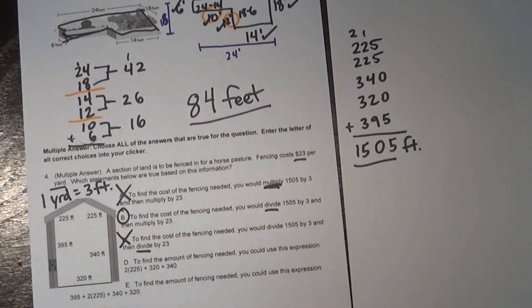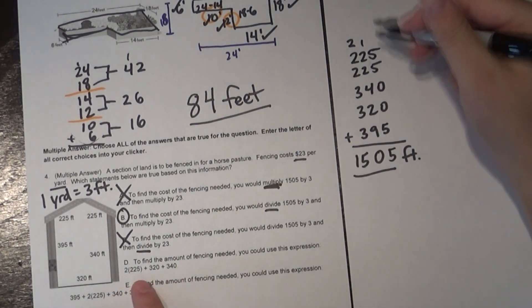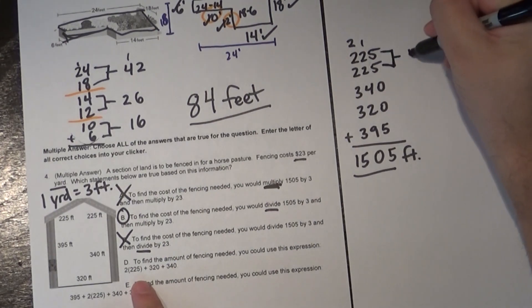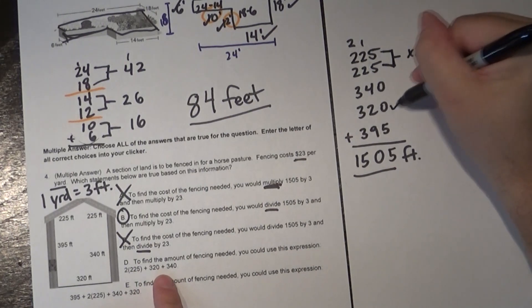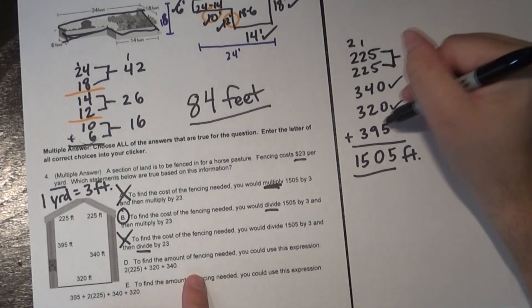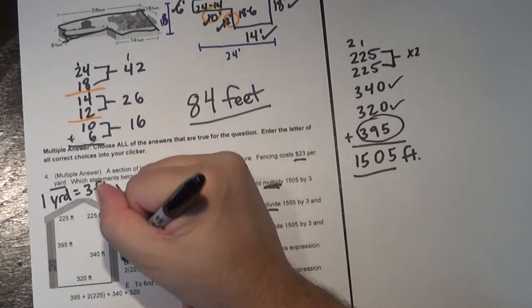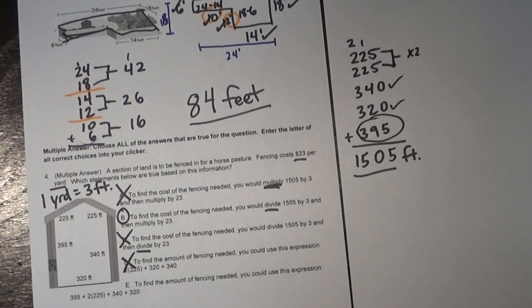Letter D says to find the amount of fencing needed you could use this expression: two times 225 plus 320 plus 340. So let's look at what I did over here. So I have two times 225, well there's two of them. So I could say that's times two. I have 320, looking good so far. 340, I'm on the right track. And then oh wait they forgot about 395. So I'm not so keen on that. I don't like that one. That one does not work.